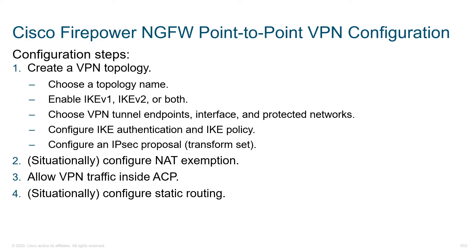To create a VPN topology, we'll start off by naming it. This is an extra step, a bit different from what we did on the ASA, but fairly intuitive. Very similar to the ASA, we can support IKE version 1, version 2, or both. Next, we'll specify the VPN tunnel endpoint interface as well as protected networks.